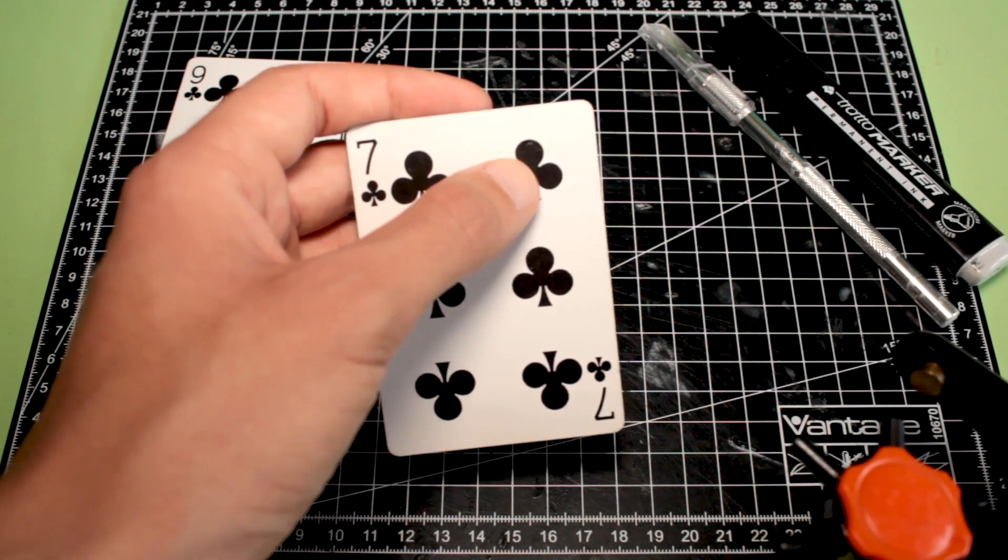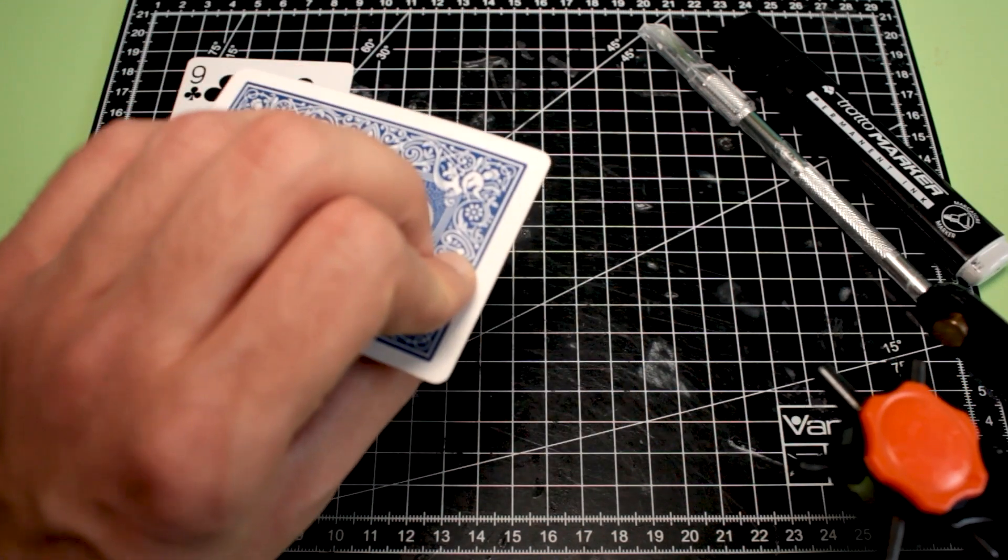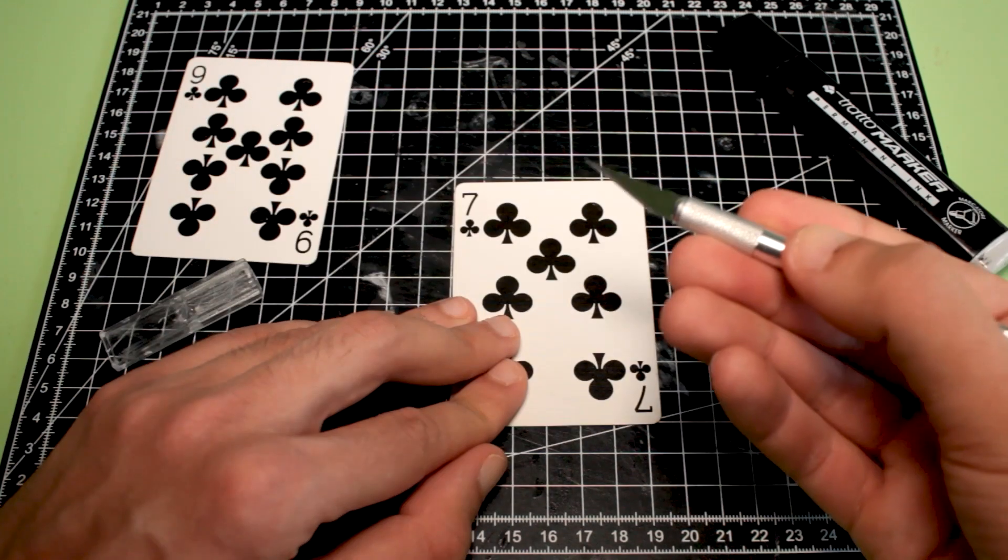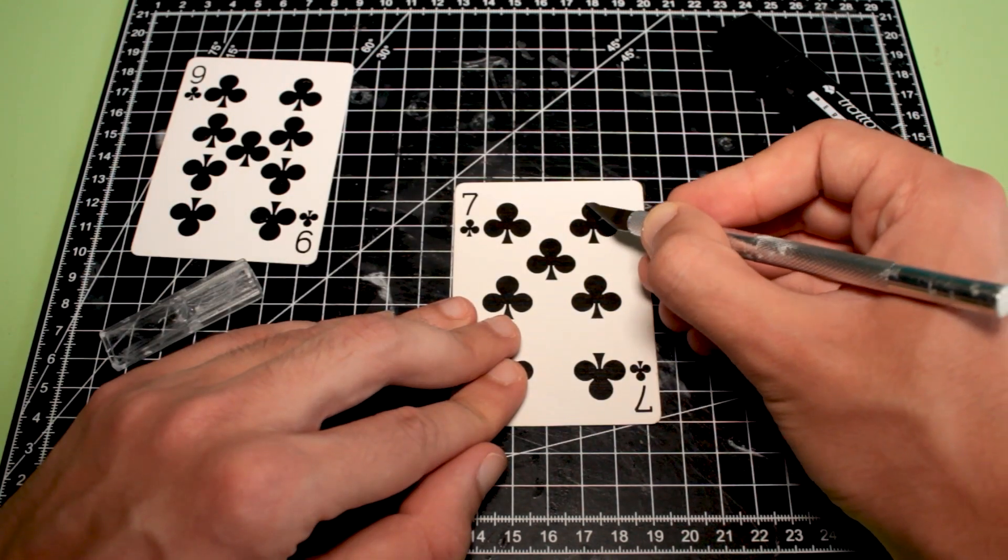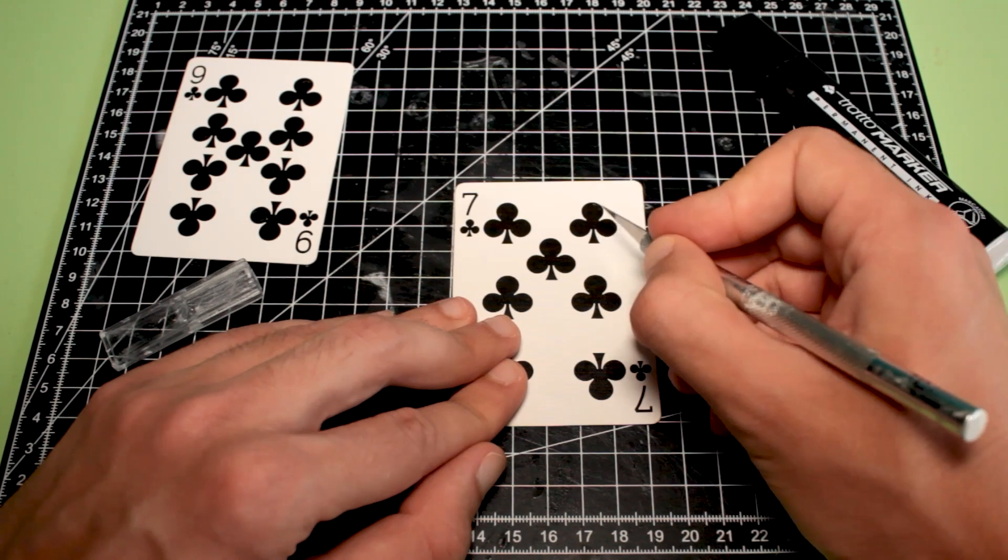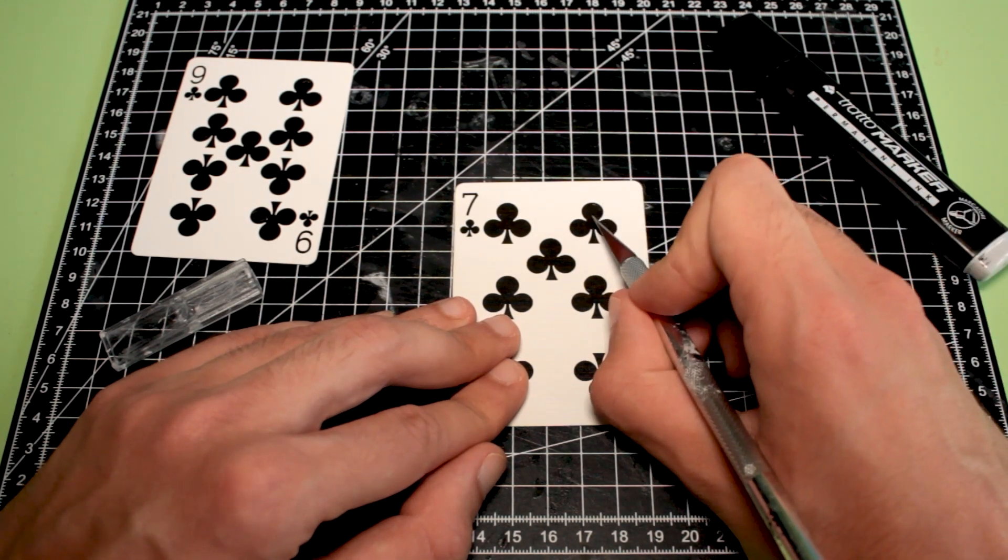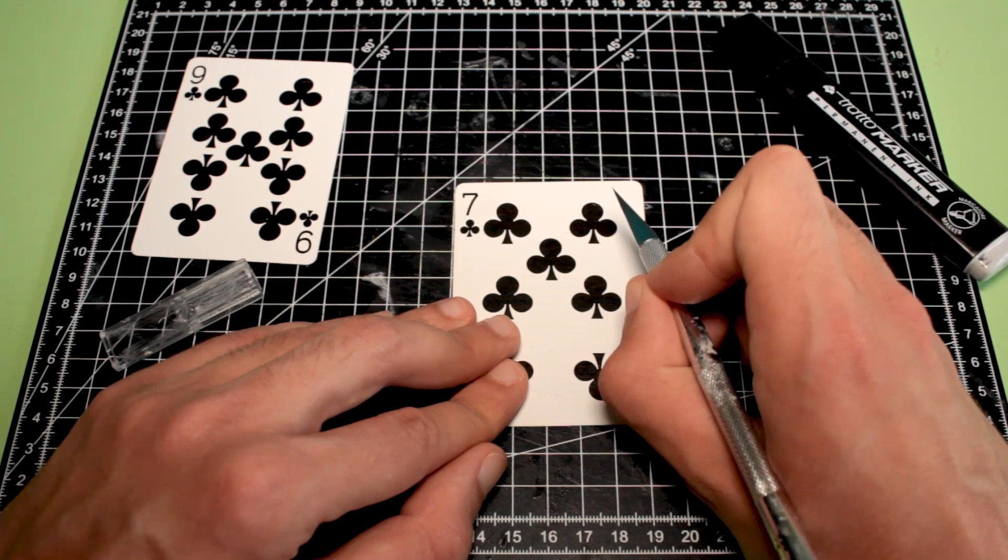At this point I've formed the circle, so I'm going to cut it out. Now we're going to cut the circle, but we don't need to cut the circle completely. In fact, the lower part should remain attached to the card.